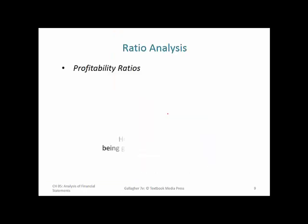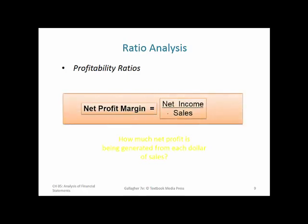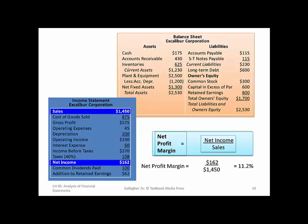Finally with profitability, the net profit margin asks how much net profit is being generated from each dollar of sales — this is the bottom-line profitability ratio. We look at net income divided by sales: net income of $162 million divided by total sales of $1,450 million gives us 11.2%. Is that a good ratio? It's positive and double digits, but we've got to compare it to this company over time and to competitor companies.